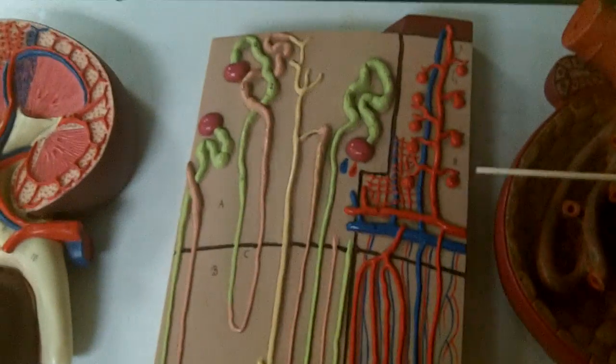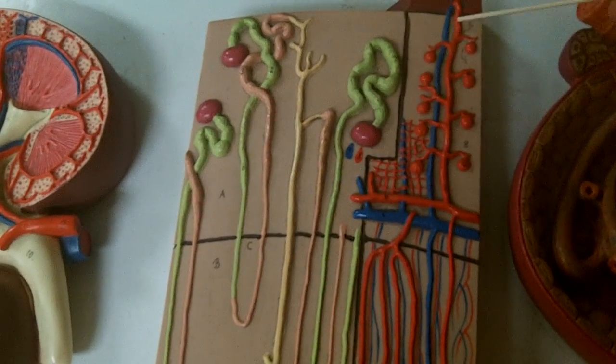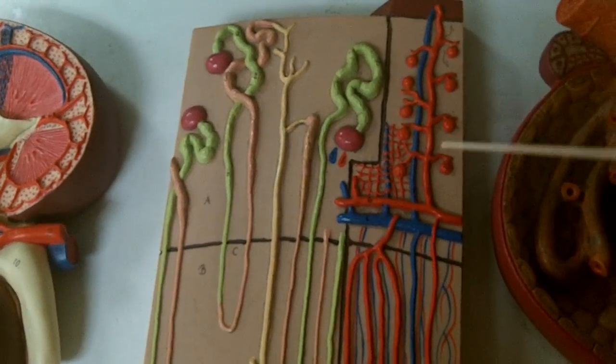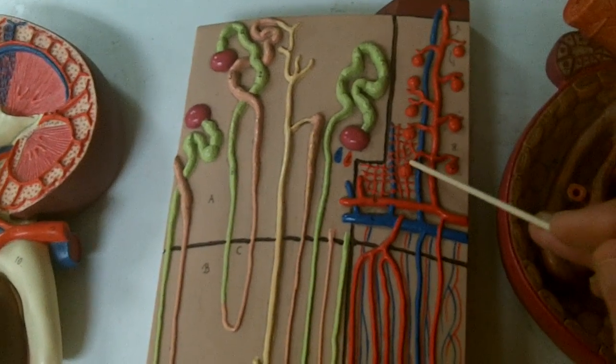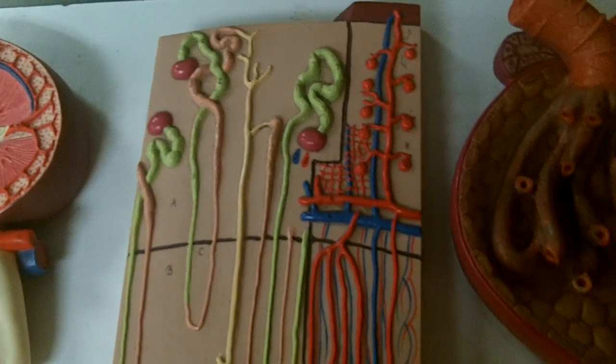Moving over here we're seeing an arcuate artery leading to a cortical radiant artery, and you can see that now we have smaller arterioles leading to these capillaries called a glomerulus.